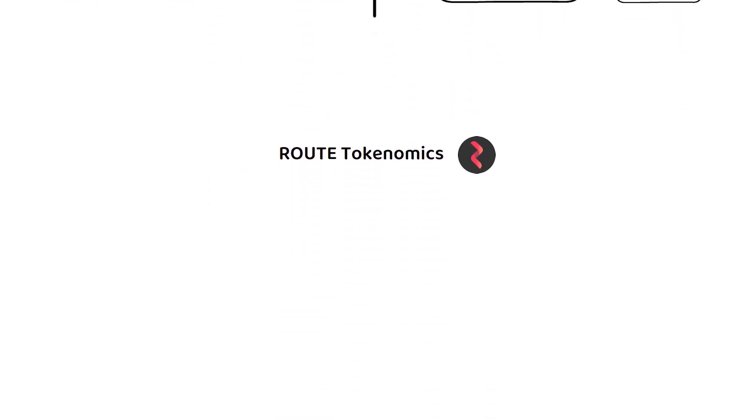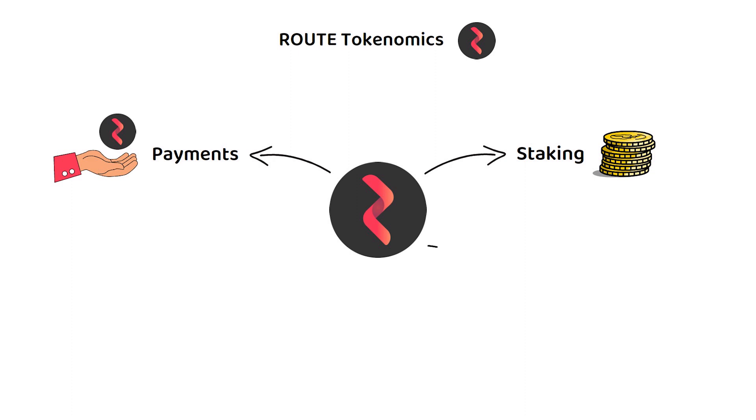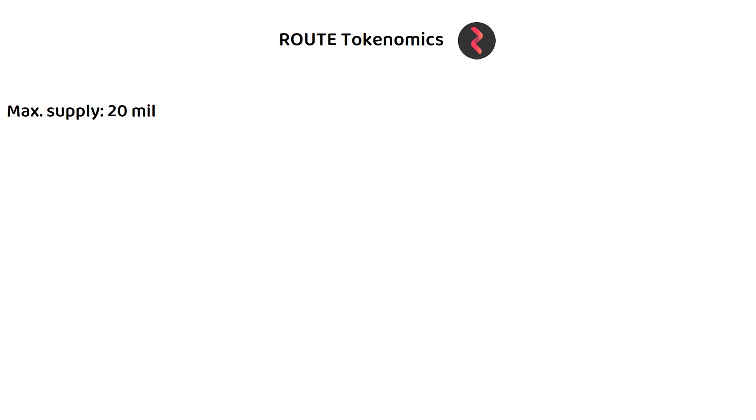But how about the tokenomics? As a Proof of Stake blockchain, the Rout token is used for all the Proof of Stake classics, like staking, making payments and governance. In total, there will only ever be 20 million Rout tokens.